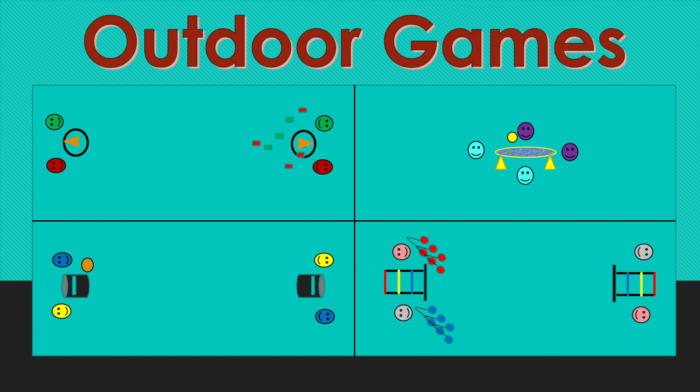The second station is spike ball. In this game there are partners that are working together in a volleyball-like game to score points. The first person serves off the net and then the other team has three hits to hit it back onto the net. If the ball cannot be returned within three hits, hits the ground, or the rim, it is a point for the other team.